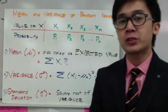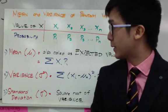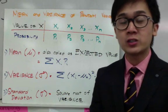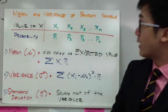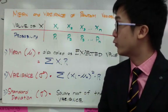In random variables, there are three measures that we could compute: the mean, the variance, and the standard deviation, just like the regular group of numbers that we did in the previous semester. To find the mean and the variance of random variables, we follow a certain formula.